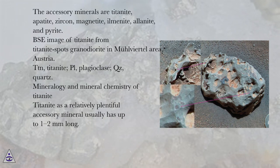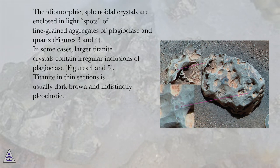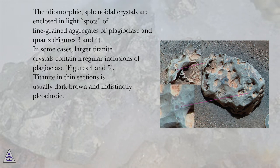Mineralogy and mineral chemistry of titanite. Titanite, as a relatively plentiful accessory mineral, is usually up to 1 to 2 millimeters long. The idiomorphic, sphenoidal crystals are enclosed in light spots of fine-grained aggregates of plagioclase and quartz, figures 3 and 4. In some cases, larger titanite crystals contain irregular inclusions of plagioclase, figures 4 and 5.